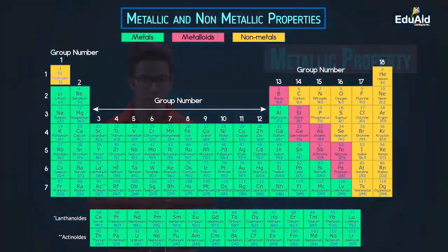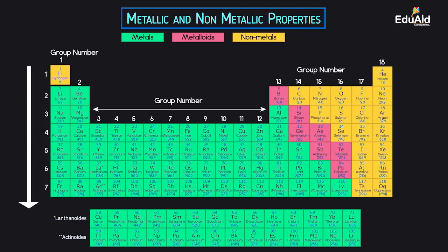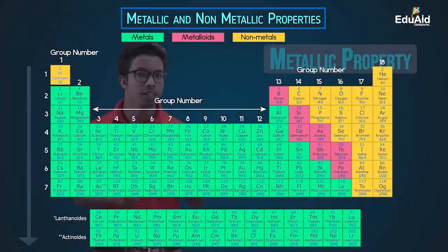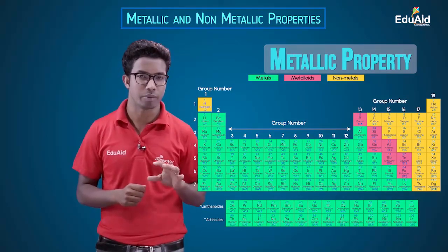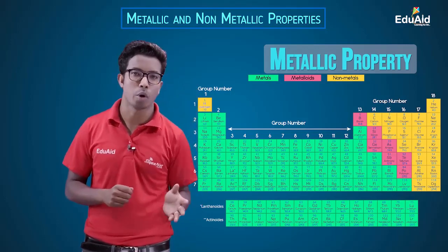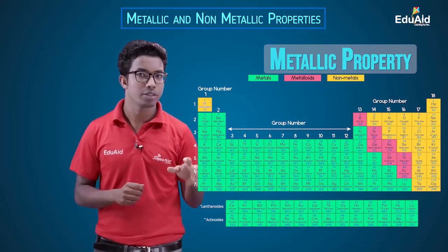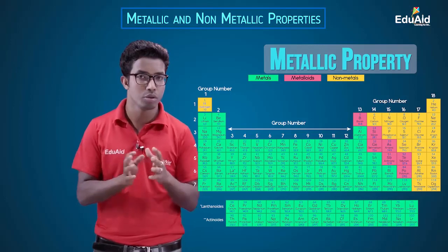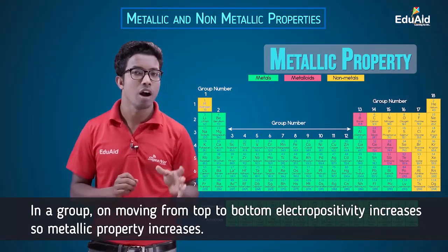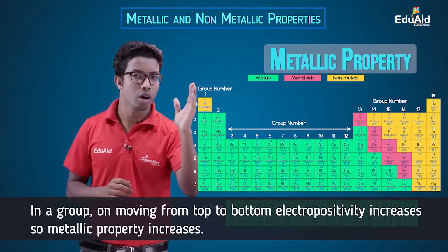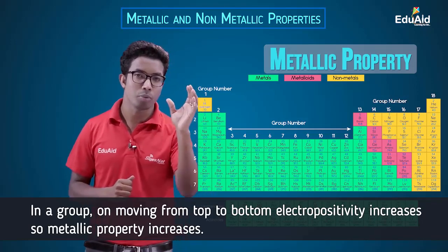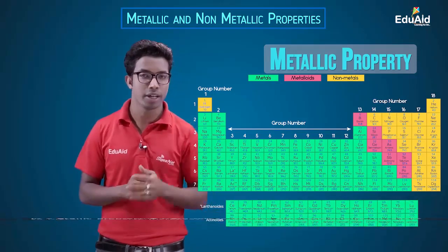Now let's see what happens in groups. In groups, on moving from top to bottom, the size of the atom increases. The distance of the outermost electron from the nucleus is increasing, so the outermost electrons experience lesser and lesser effective nuclear charge. This means those electrons can be easily lost, and the ability of an atom to lose electrons increases from top to bottom. So the electropositivity and the metallic property also increase from top to bottom in a group.